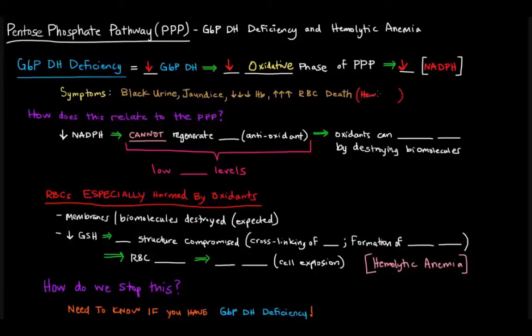So how does this actually relate to the pentose phosphate pathway specifically in more detail? Well, what happens if we have low levels of NADPH? If we have low levels of NADPH, that means we cannot regenerate GSH, which was the reduced form of glutathione.